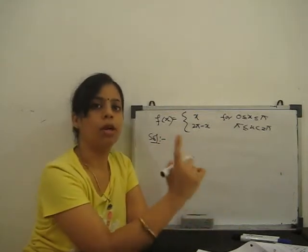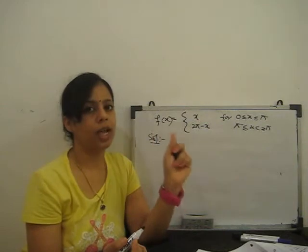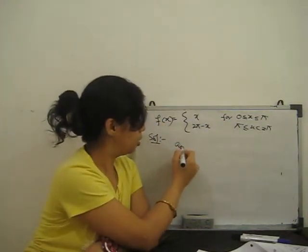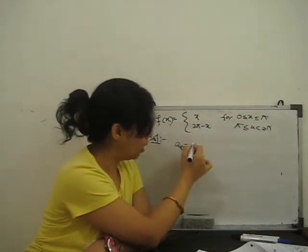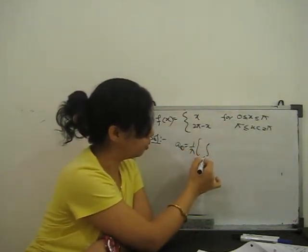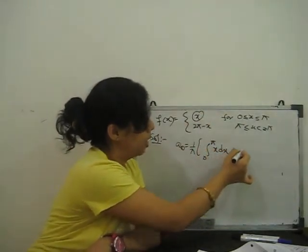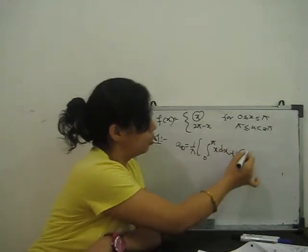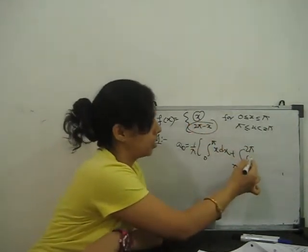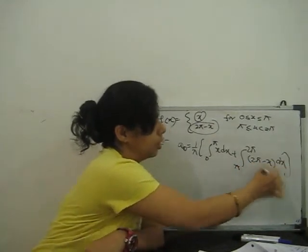So our Fourier series is f(x) = a0/2 + summation n from 1 to infinity of [an·cos(nx) + bn·sin(nx)]. First I derive a0: a0 = (1/π)[integral 0 to π of x dx + integral π to 2π of (2π − x) dx].